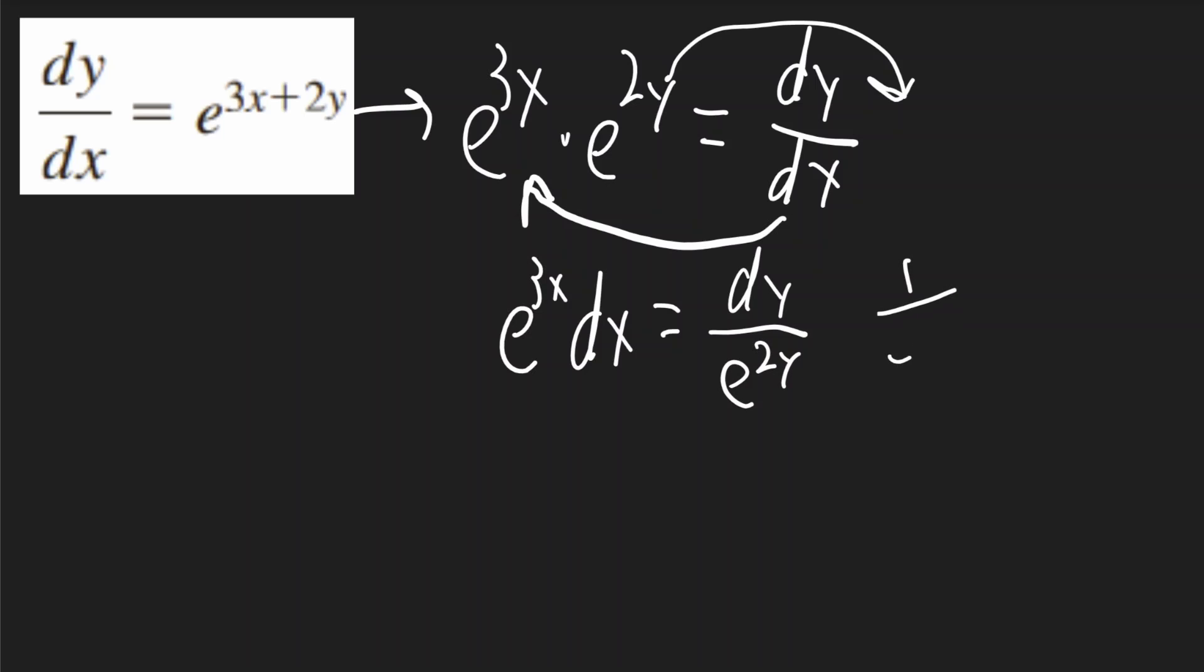Now, 1 over e to the 2y is going to be equal to e to the negative 2y. So I can now rewrite this. It'll be e to the 3x dx is equal to e to the negative 2y dy.